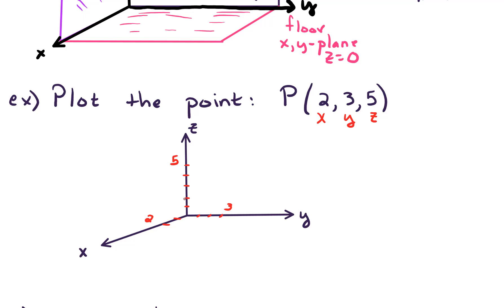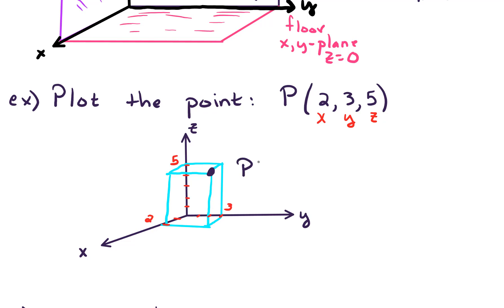What I recommend is that you draw a little rectangular prism to help visualize that. I'm going to draw that here in a light color so we just use it as a guide. We'll go up to five units, and keep drawing this rectangular prism as a perspective drawing — come down a little bit, then go over and back. So roughly speaking, that's a rectangular prism coming out two, over three, and up five. Our point of interest is the front corner of this box — that front corner is the point (2, 3, 5).